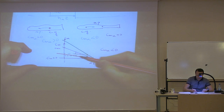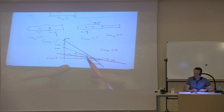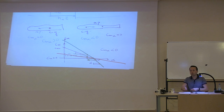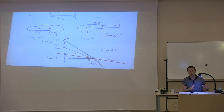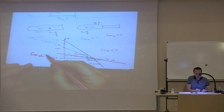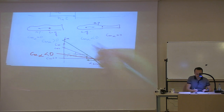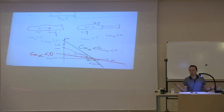For the same alpha disturbance, the restoring moment of the shallower curve would be a lot less. For the green one with the same alpha, you get a lot of moment because of the steepness. Both have CM_alpha less than zero, however the green one is producing a lot more moment for the same disturbance.